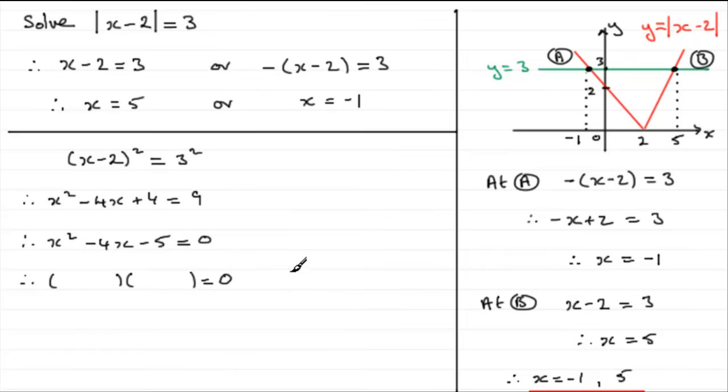You can use that and you'll get the same results. But if you factorise this, you should find that it factorises to x minus 5 and x plus 1. So you can just check that out. It expands to give x squared minus 4x minus 5.